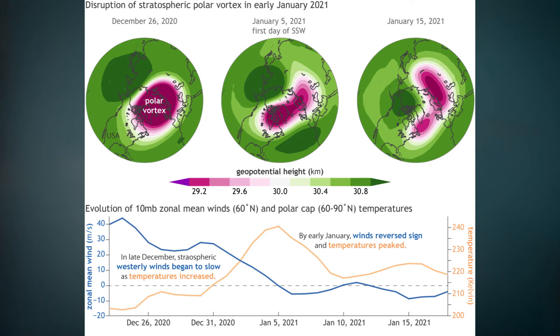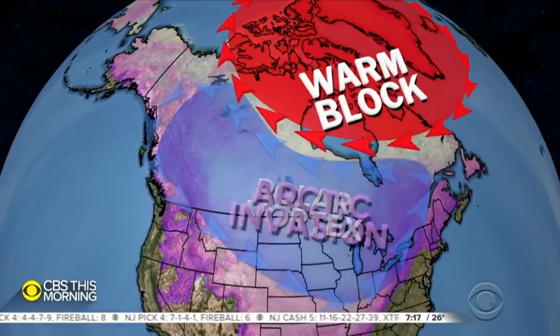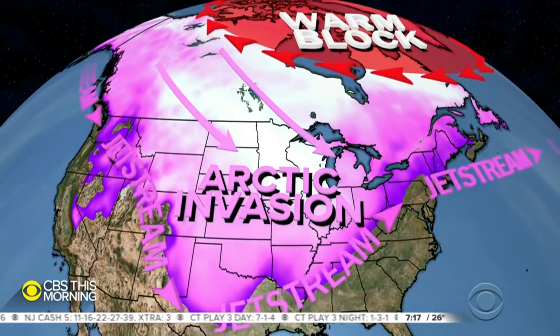Regarding the 2021 event, on January 5th, increased temperatures in the stratosphere were noticed, and from that time it can take anywhere from zero to 30 days for the polar vortex to actually dive south and descend thousands of feet to the surface.